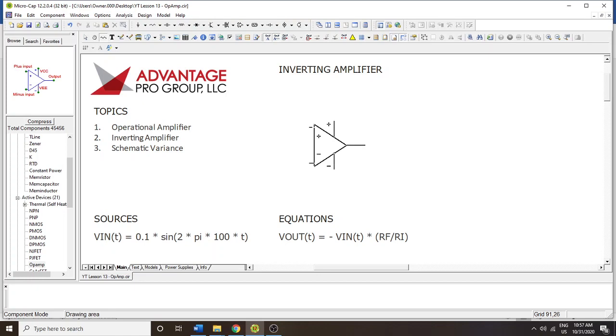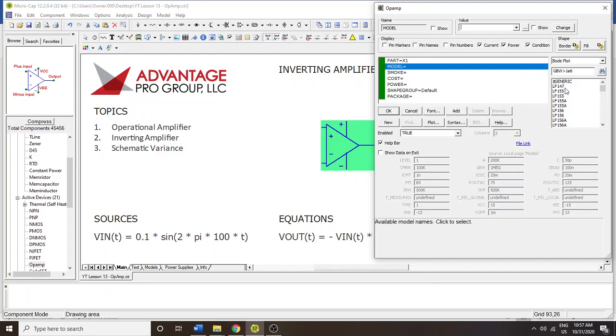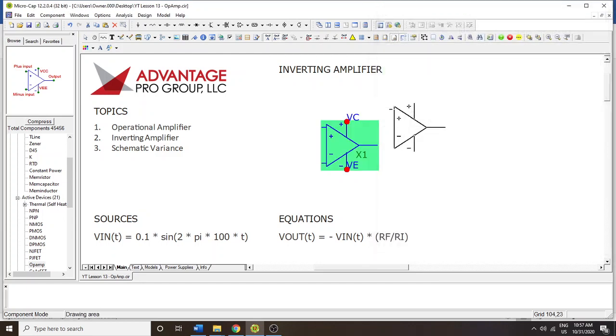So you start by clicking the operational amplifier icon up here, and then you put down the part. You can choose LF147. That's a pretty good selection.